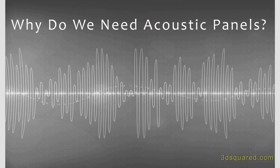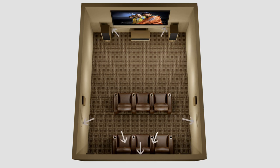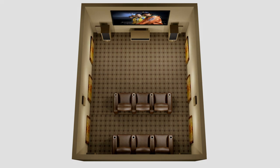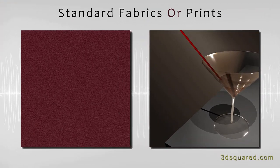So why exactly do we need acoustic panels? In an untreated room, sound waves will bounce off of the hard surfaces. The sound waves linger in the room and this causes an echo effect. So the goal is to diminish the time the sound stays in the room. Adding a series of acoustic panels to the room will absorb the sound waves, significantly cutting down on the time that the sound lingers.